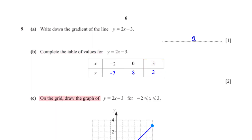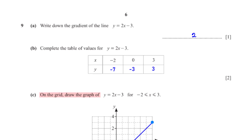On the grid, draw the graph of y = 2x − 3 for x ≥ −2 and x ≤ 3. Plot the points from the table and connect them with a straight line.